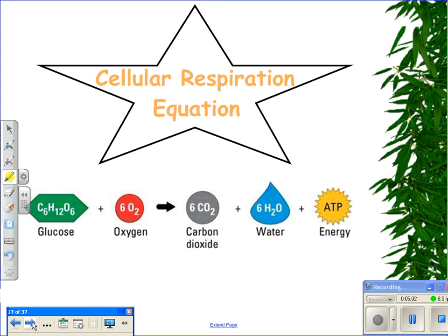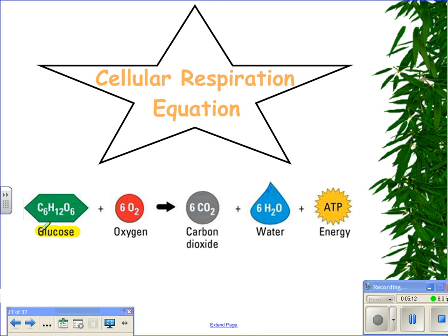Let's look at the cellular respiration equation. First, we have the glucose molecule that we made in photosynthesis. That combined with six oxygen molecules is going to give us two byproducts. One is six molecules of carbon dioxide. The other is six molecules of water. And our important product — the ultimate product — ATP. This is the energy form that can perform cellular work.